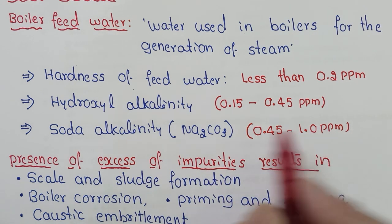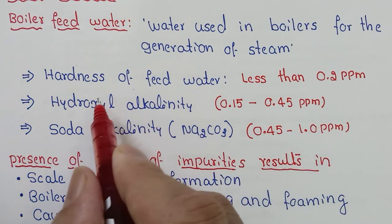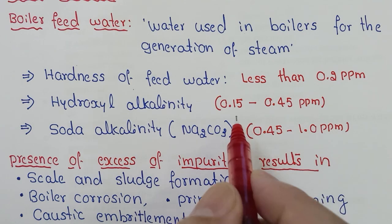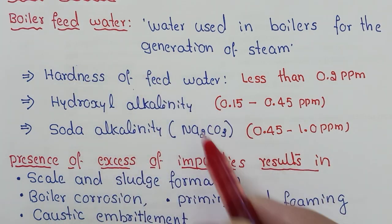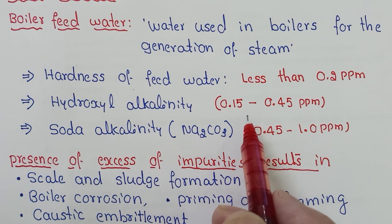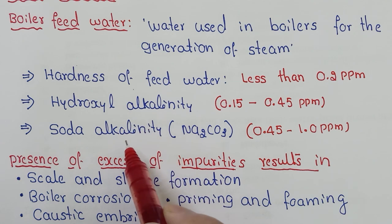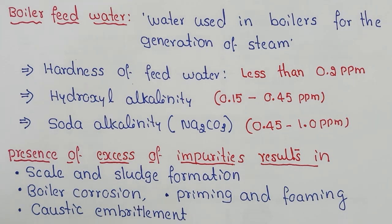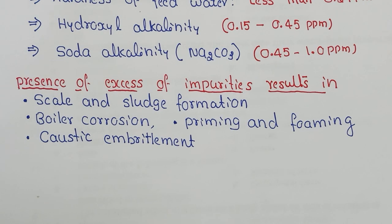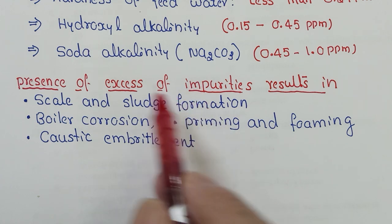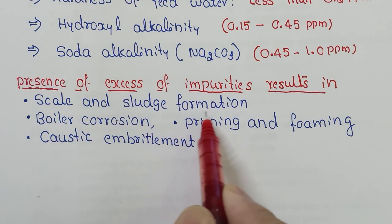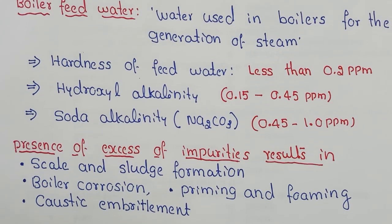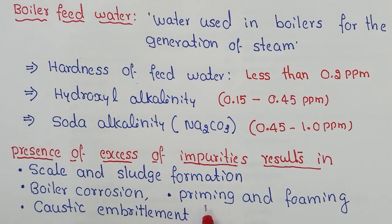If the soda alkalinity is between 0.45 to 1 ppm, hydroxyl alkalinity between 0.15 to 0.45 ppm, and hardness less than 0.2 ppm, these are within tolerable limits and the water can be fed into the boiler without causing much damage. However, if impurities in the form of hardness, hydroxyl, or soda alkalinity exceed these limits, it results in problems in the boiler — mainly scale and sludge formation, boiler corrosion, priming and foaming, and caustic embrittlement.